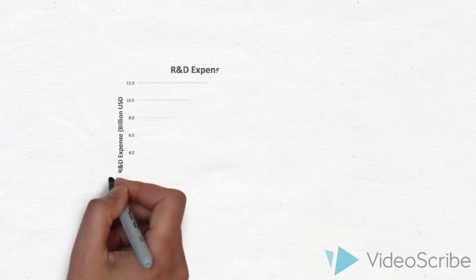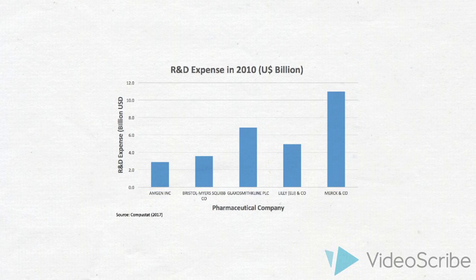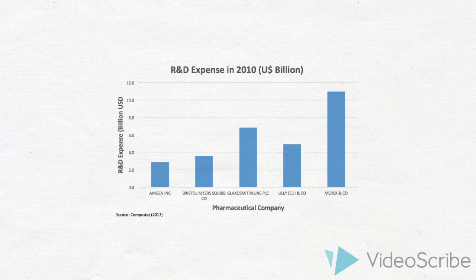To further examine the data, you compile the information into a bar graph to provide a snapshot of the data at the given time. You see that the data nicely compares the different pharmaceutical companies and their R&D expenses.